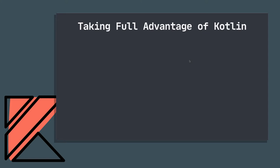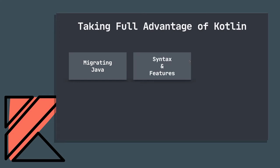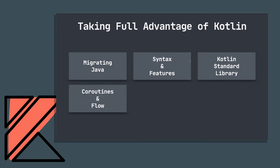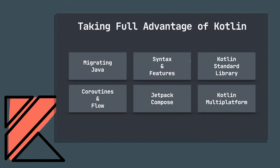As I was brainstorming for this talk, I started thinking about different ideas around taking advantage of Kotlin. Things that came up included migrating a Java codebase to Kotlin, taking advantage of Kotlin syntax and features, the Kotlin standard library, coroutines and Flow for asynchronous programming, Jetpack Compose, Kotlin Multiplatform, and other advanced topics. There's so much here that I had a hard time picking a set to focus on.